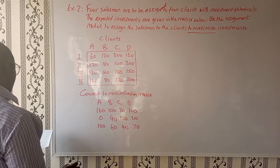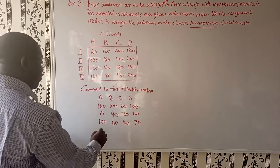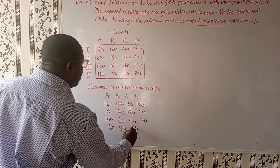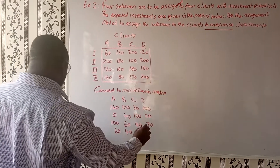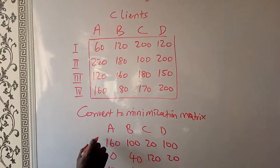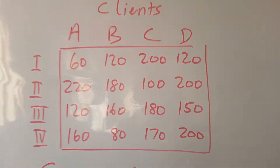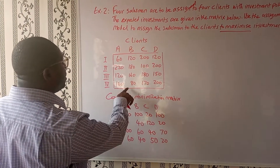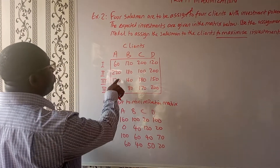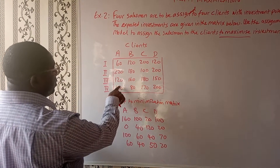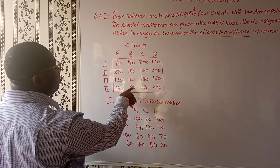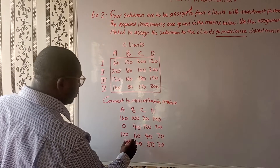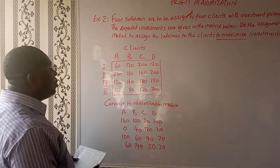The last row will have 60, then 40, 50, and 20. So we have now converted the matrix. To clarify: 220 minus 160 gives us 60, and 220 minus 80 gives us 140.